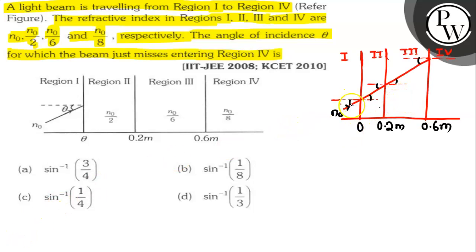So, this is the diagram. This is region 1, this is region 2, this is region 3 and this is region 4.